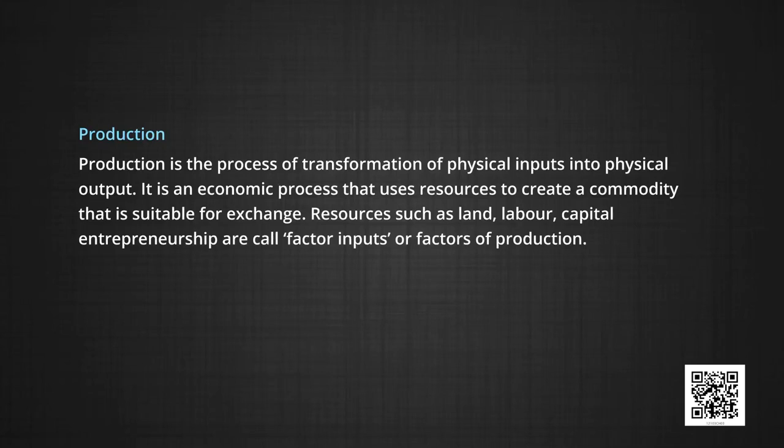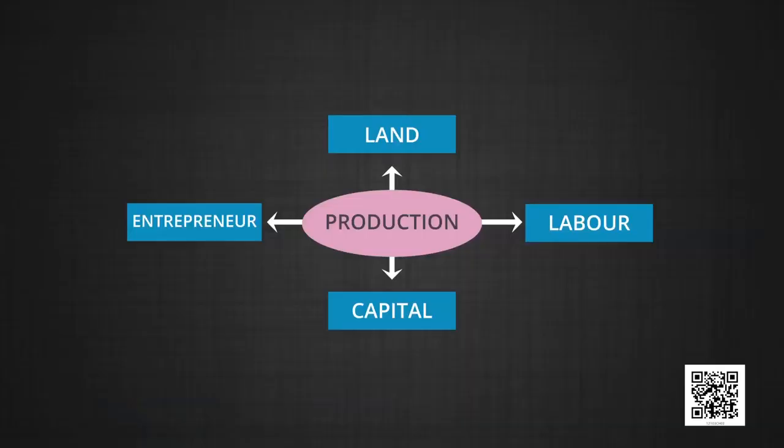Resources such as land, labor, capital, and entrepreneurship are called factor inputs or factors of production. Land typically includes all natural resources. Capital includes all manmade resources that are used in production — machines, tools, factories, etc. Entrepreneurship or enterprise is what brings various factors together to organize production.